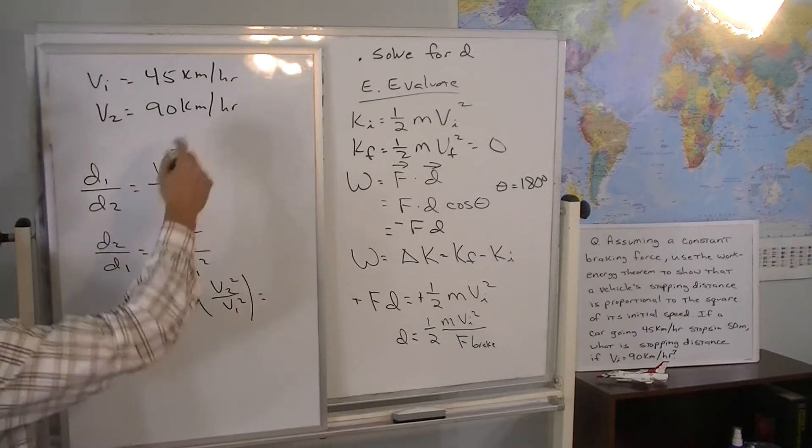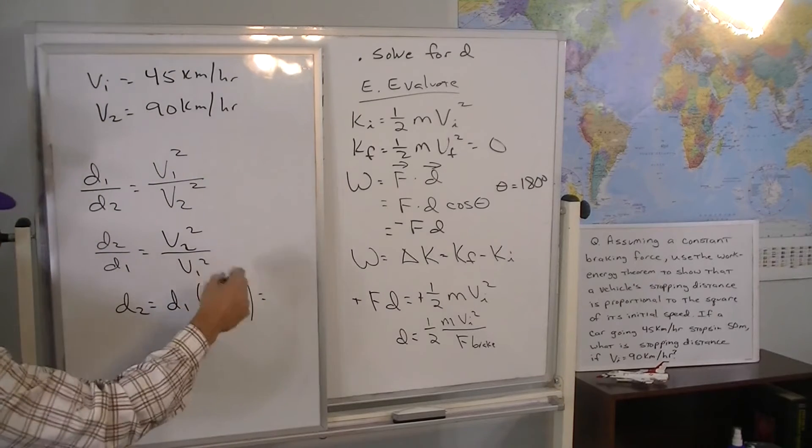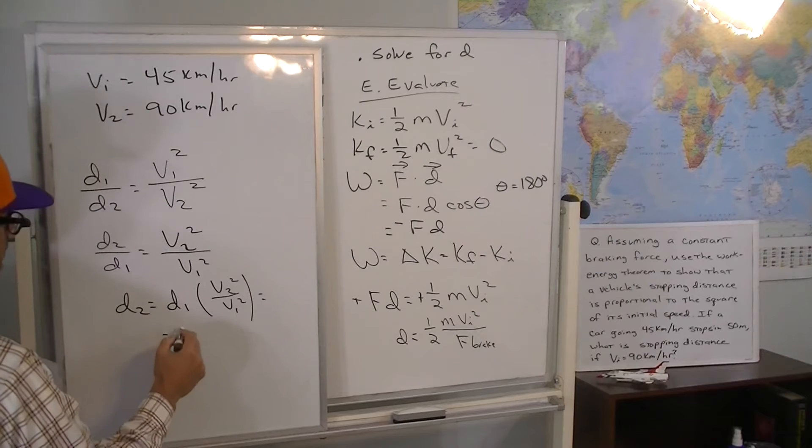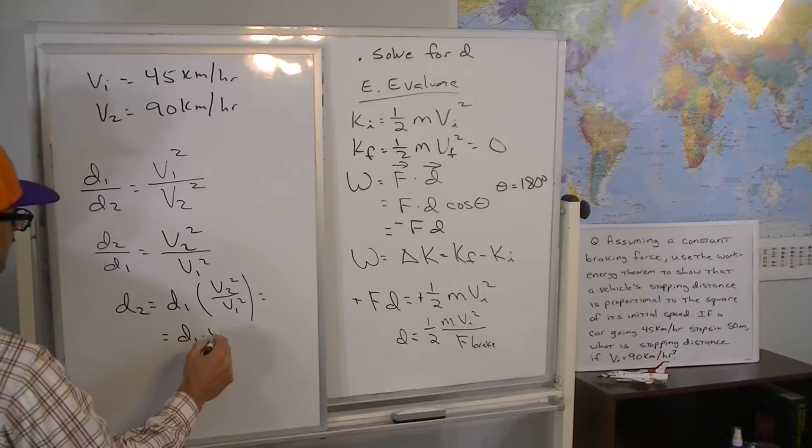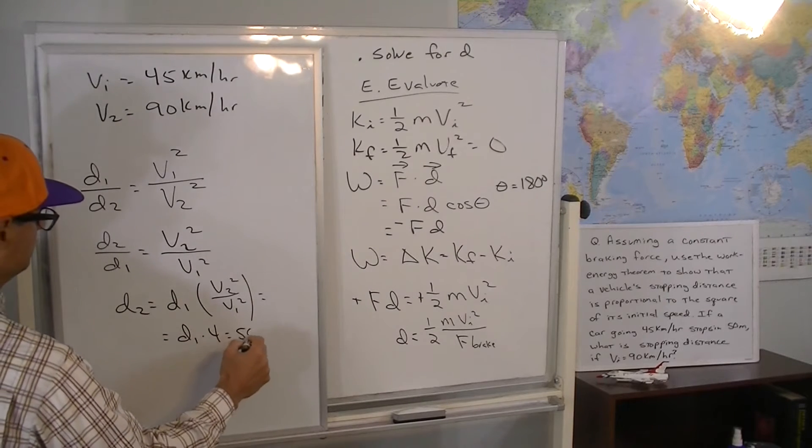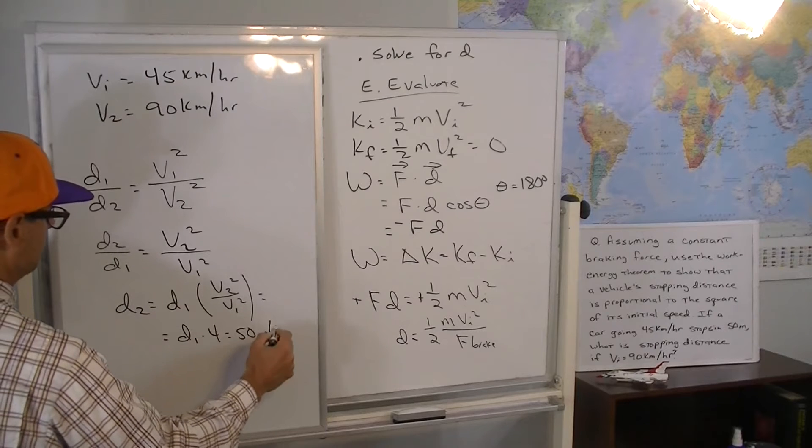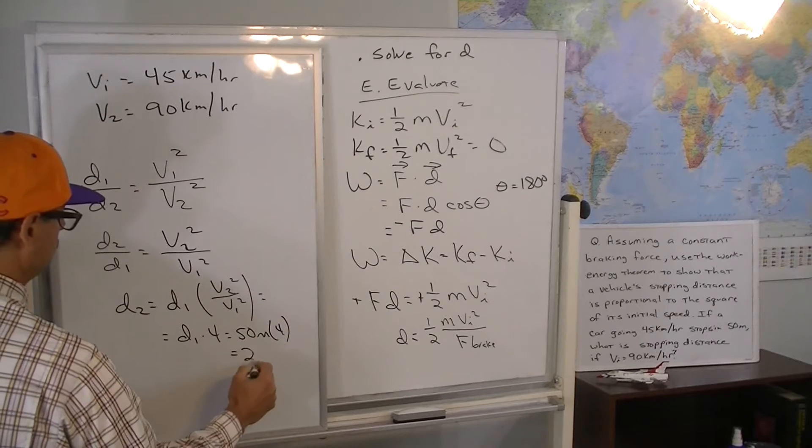So you just plug in the numbers here, and it turns out this factor is just 4, so d2 equals d1 times 4, so it's 50 meters times 4, or 200.